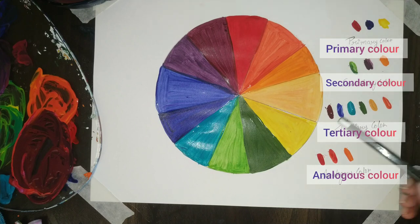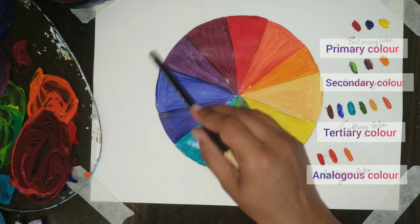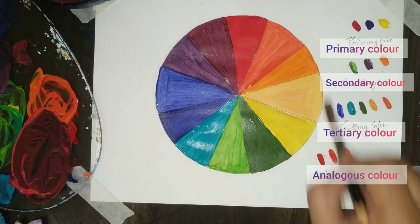Same way yellow, ochre and green, they are close to each other and they are next to each other. Blue, violet and light blue, they are next to and close to each other. These are my analogous color.